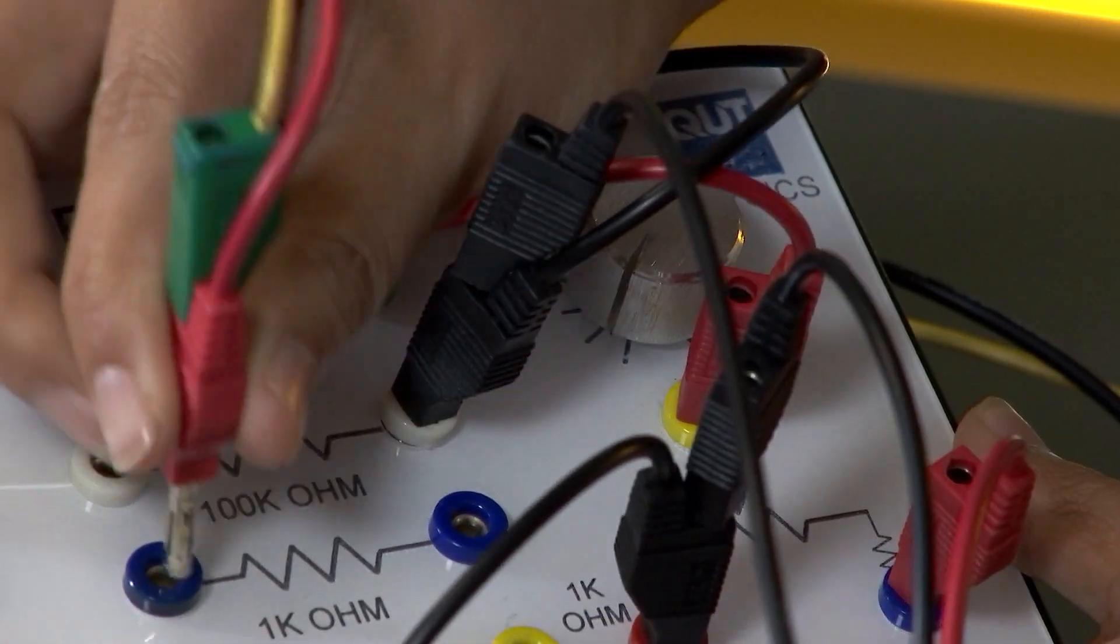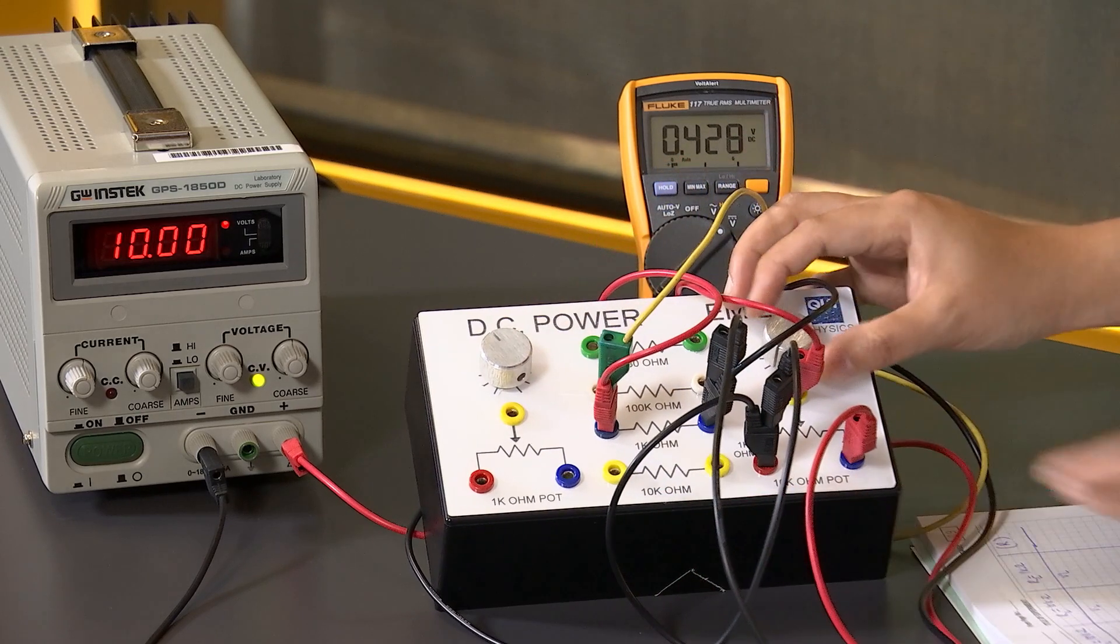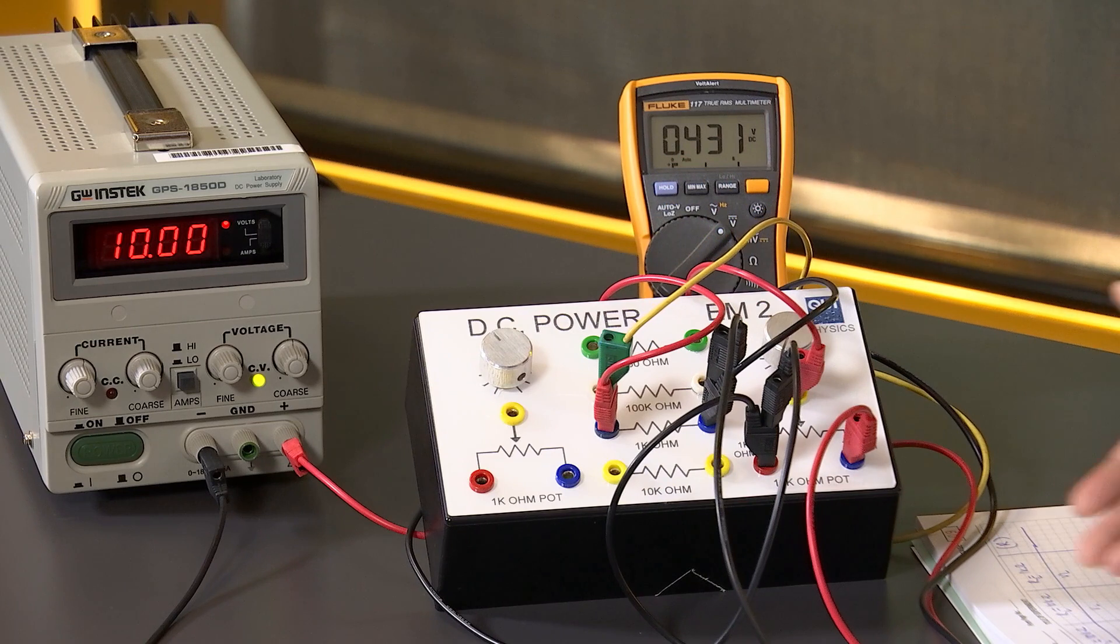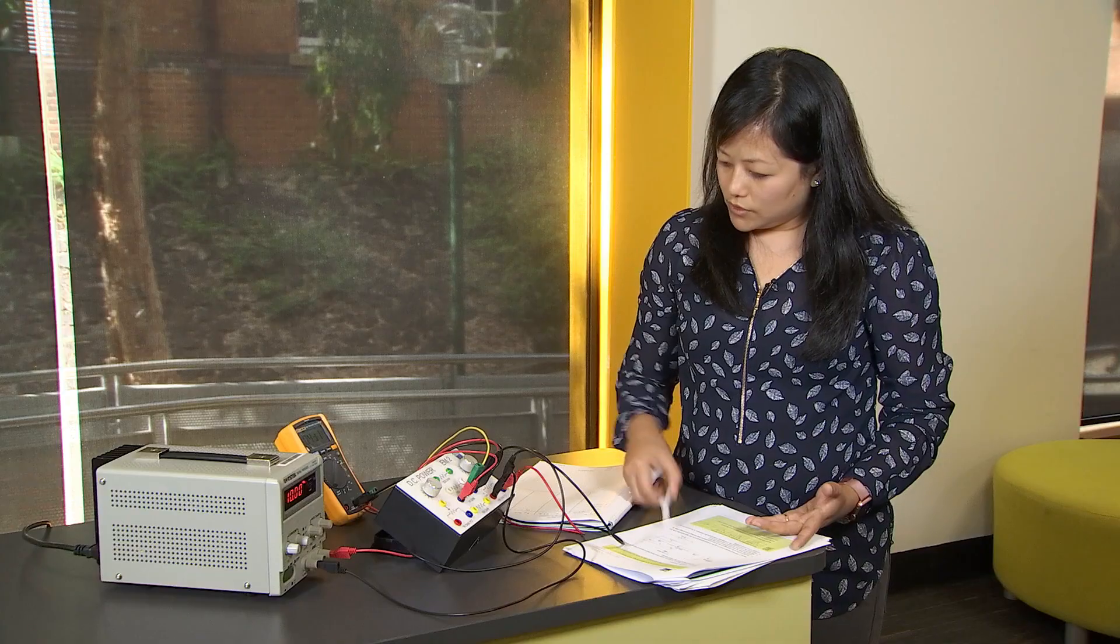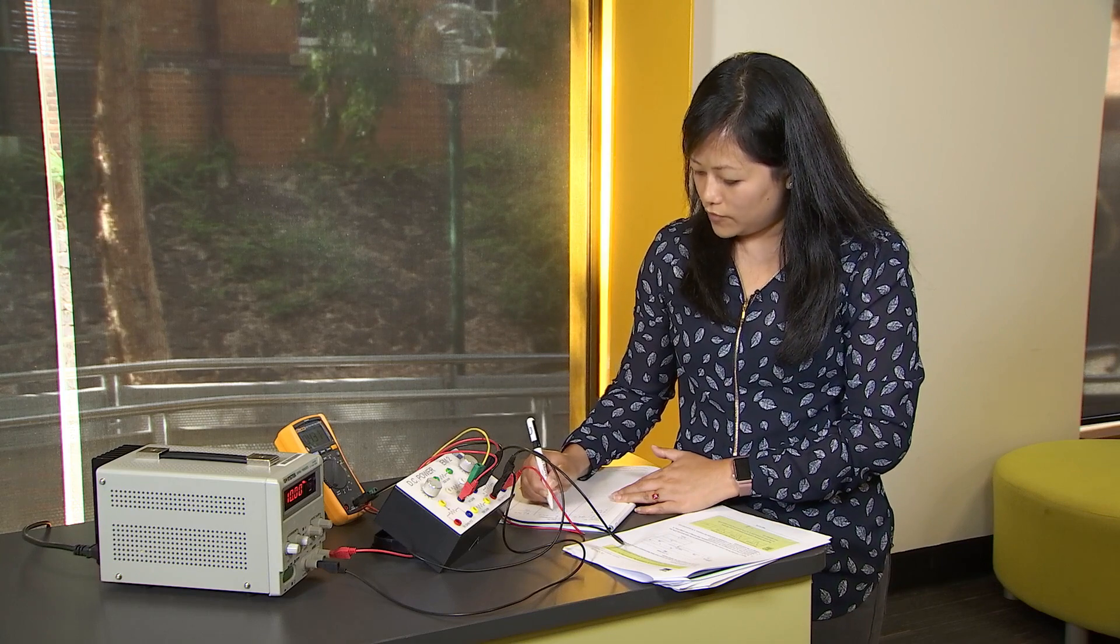From 100 kilo ohms to 1 kilo ohm by moving these tubes. We repeat the same measurement at exactly the same points that we did for the first row and record it in the second column. So for the first one, it's 0.431 volts.